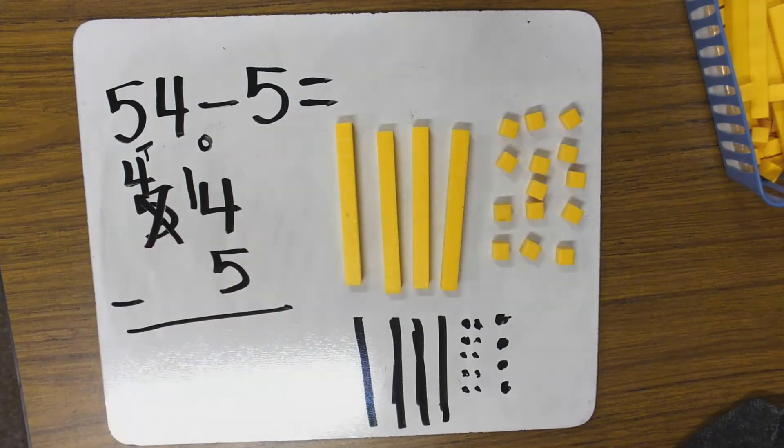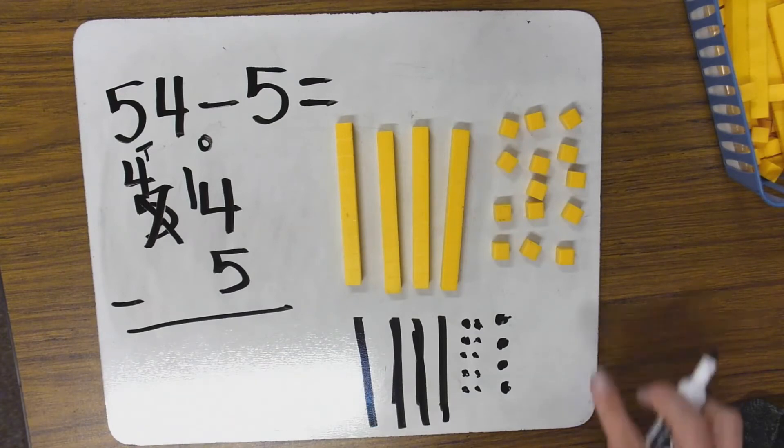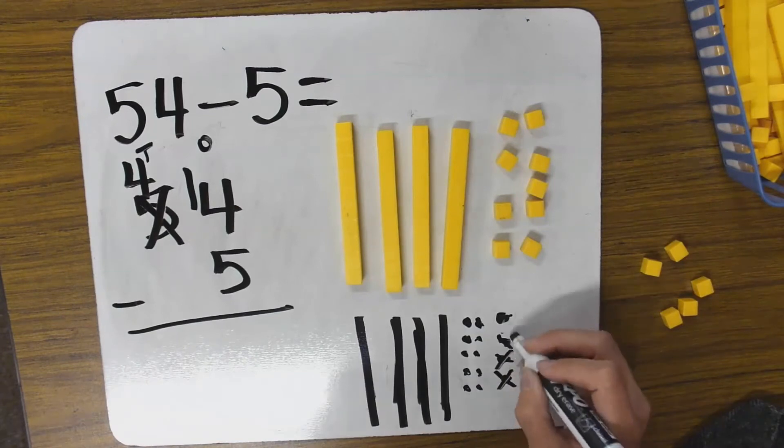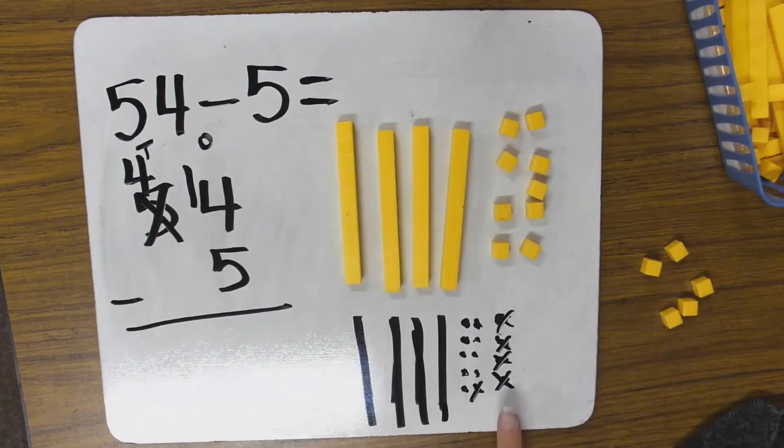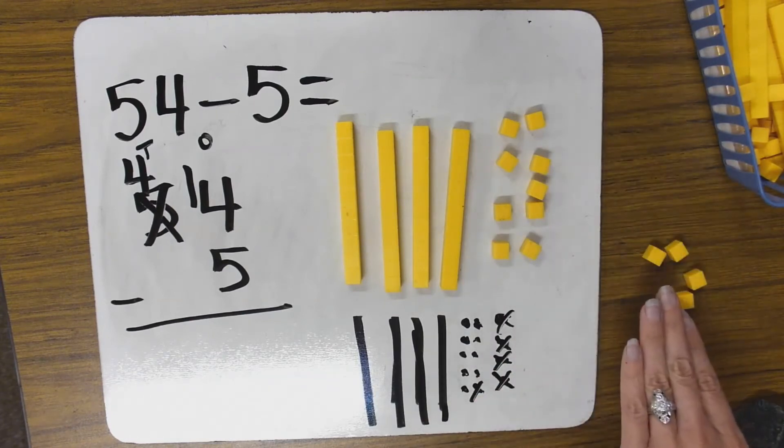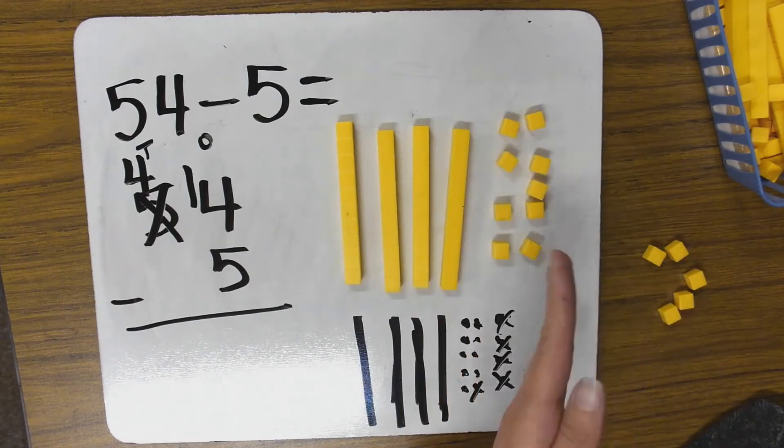So now 14 minus 5. Do I have enough ones to take away? I do. So I can take away 5. I cross them out instead of erasing because I want to keep track. If I make a mistake, I can still see the work. If I make a mistake with the cubes, I still have them here so I can double check.